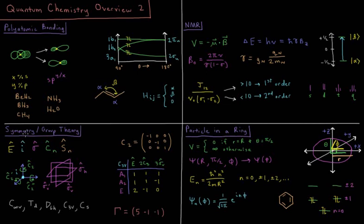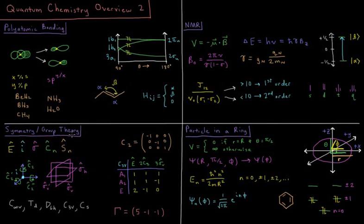Moving on then to symmetry and group theory, we show how there are things like symmetry operations, things like identity, inversion, reflection, rotation, and improper rotation, which can leave an object unchanged if it has a given symmetry element associated with those things.